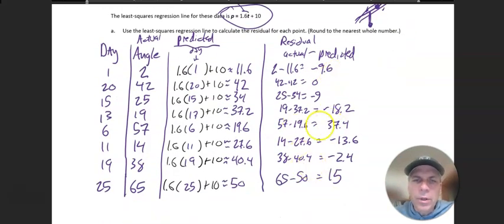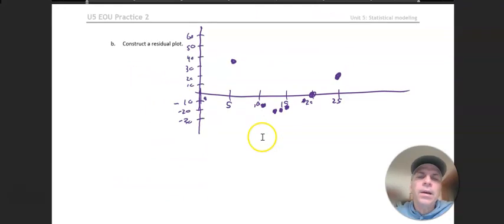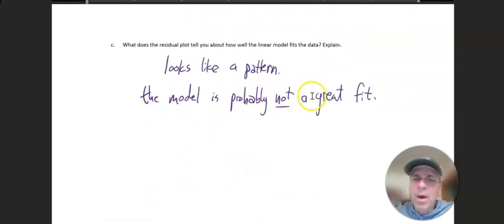So here's all our residuals. Notice we just crank them out: like here, plug in the 11—there's your predicted. Actual minus predicted. And we make our residual plot, and it looks—looks like a definitely a pattern. So I would say the model's probably not a great fit. All right, are you ready for that assessment?